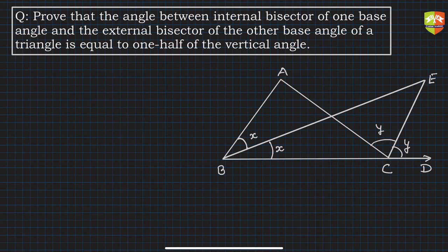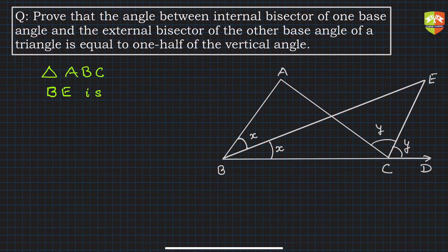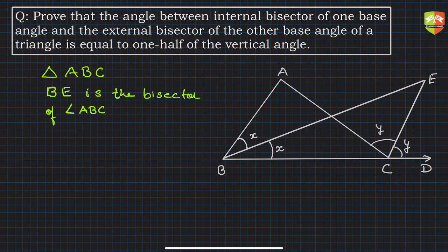Here is triangle ABC. BE is the bisector of angle ABC. Angle ABC is the internal base angle, so one base angle is angle ABC whose internal bisector is BE.